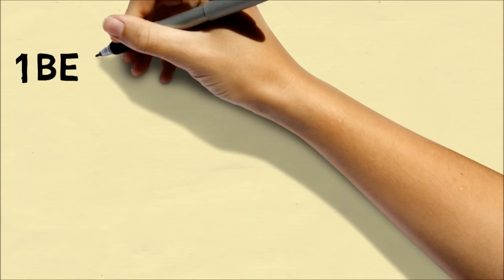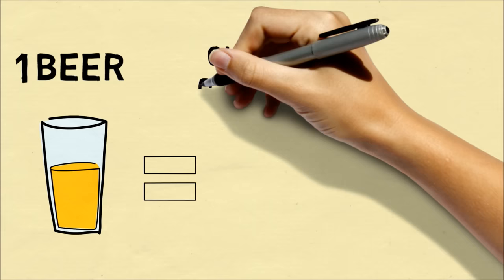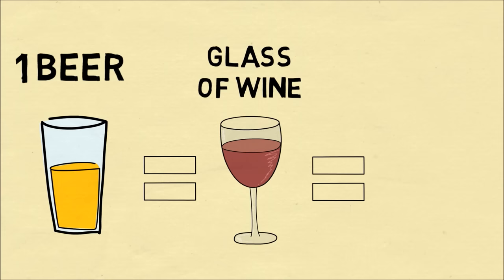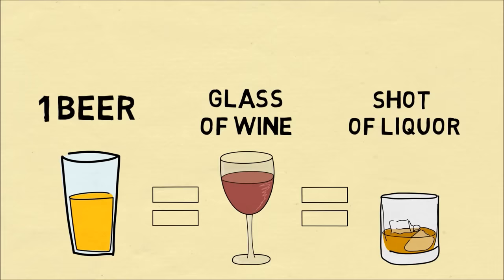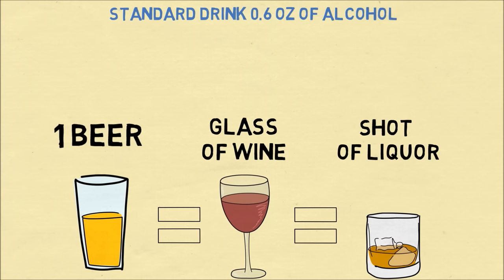In America, they often say that one beer is equal to one glass of wine, which is also equal to one shot of hard alcohol. But where did they come up with this equivalency between different types of alcohol? The reason is the definition of a standard drink is 0.6 fluid ounces of alcohol, and each of these drinks actually contains that amount of alcohol.